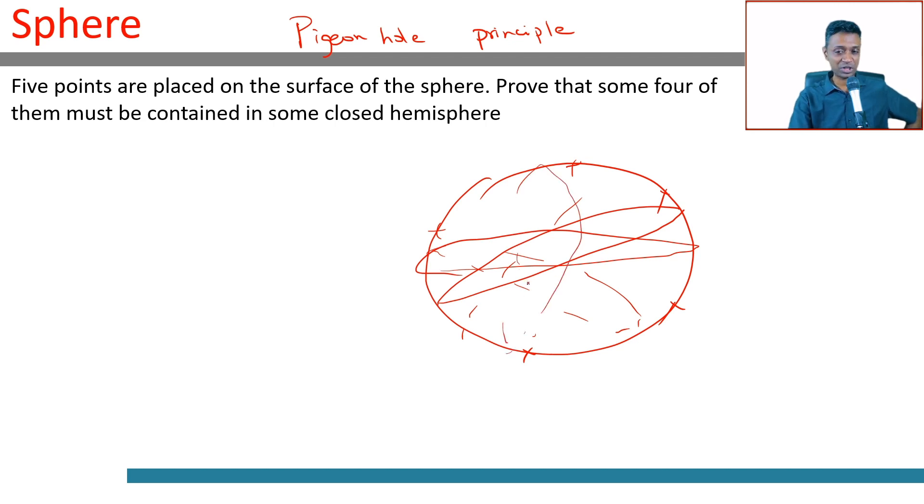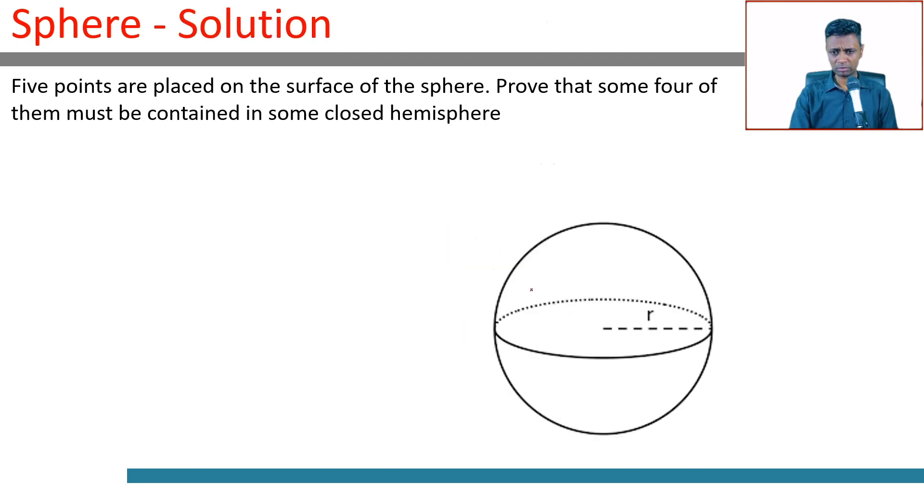How do we prove this? We have a sphere like this with points on the surface here, here, here, and here. How do we prove that we can carve it into a hemisphere that will definitely have four? I'm not necessarily having to cut through this—I can cut the hemisphere part anywhere. But you want to prove that some four of them must be contained in some closed hemisphere, including all the endpoints.